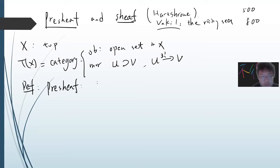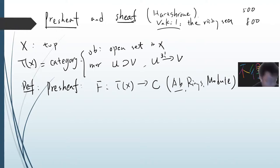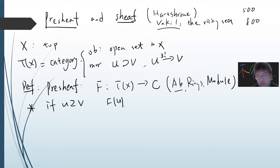A pre-sheaf is basically a functor from T(X) to another category C. In algebraic geometry, C will be abelian groups, rings, or modules. Each object is an abelian group and morphisms are abelian homomorphisms; similarly for rings. So if U covers V, you have F(U) as an object in C and F(V), with a restriction map R_{UV}, called the restriction.